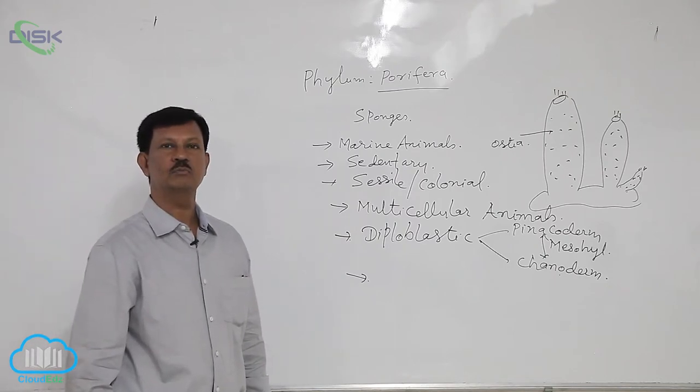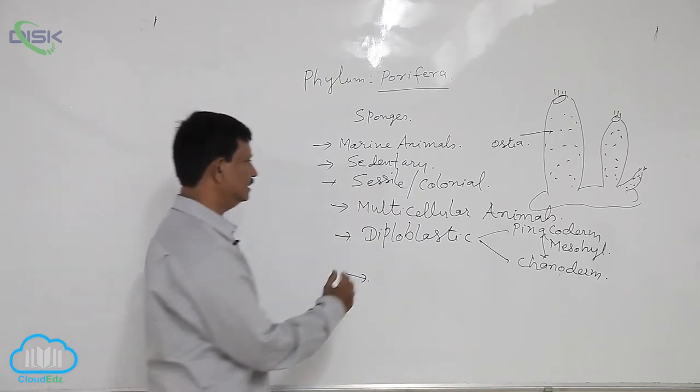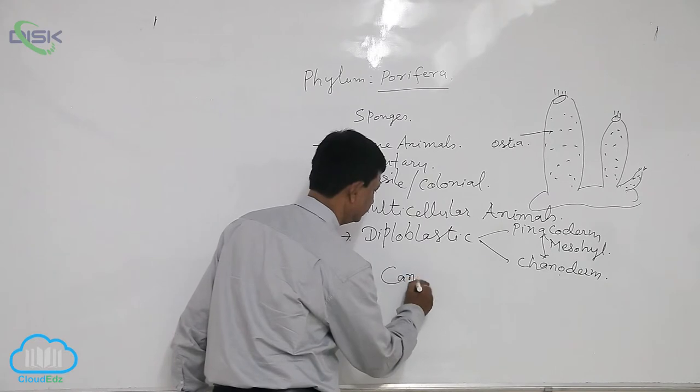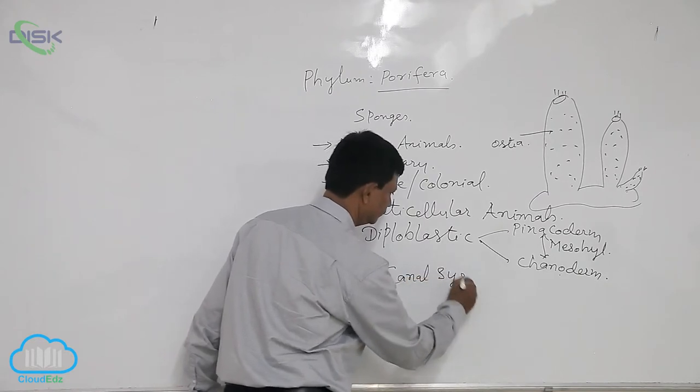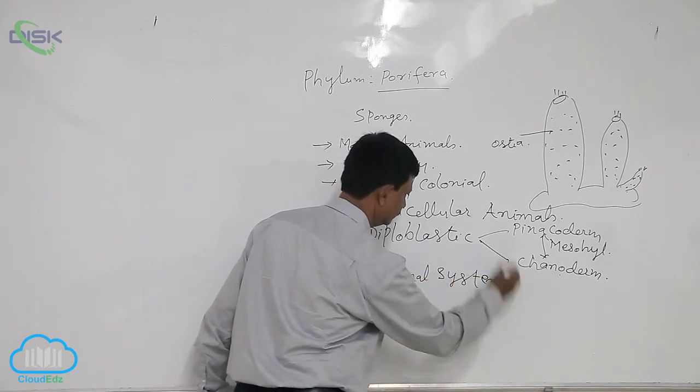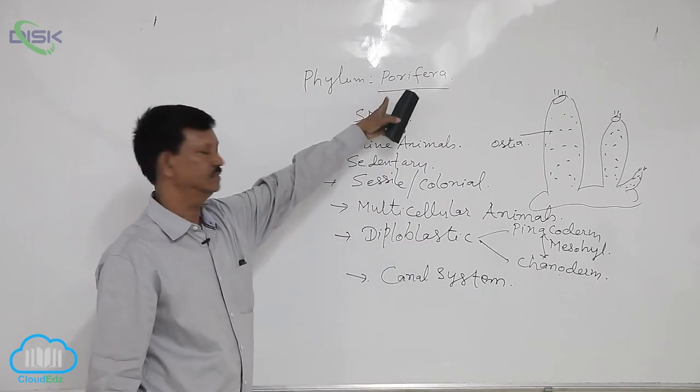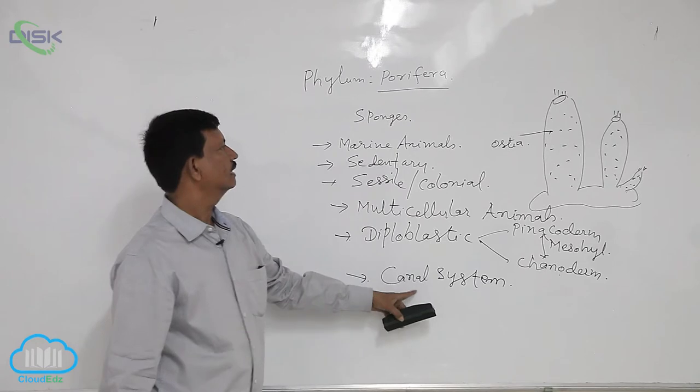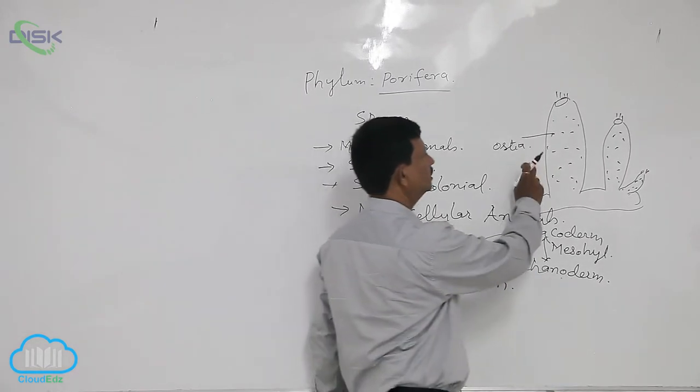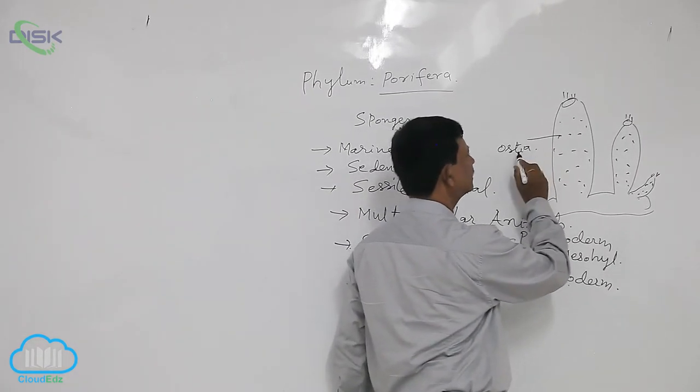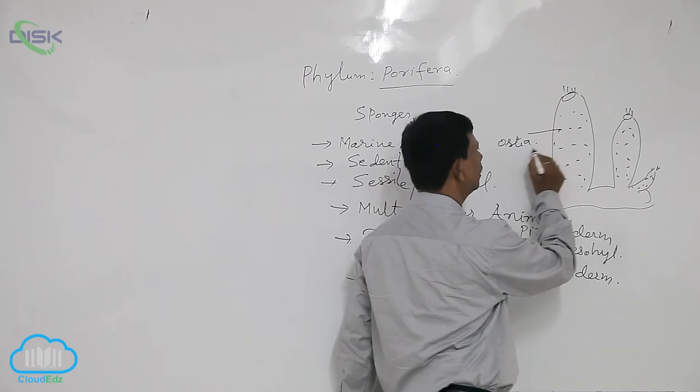There is a special type of water transport system present, known as the canal system. This is present only in this phylum, which is absent in other phyla. These are sedentary forms in marine water. Water regularly enters into the body through the ostia.